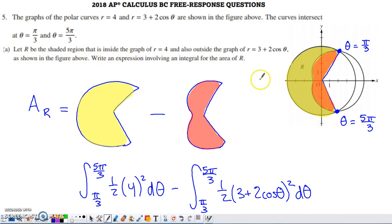R is the shaded region. I've already done some highlighting over these graphs. R is what you see right here that's inside the circle but outside of the limaçon. We're looking to find an expression involving an integral for the area of R.